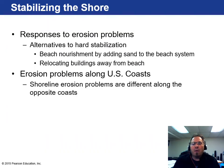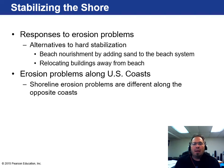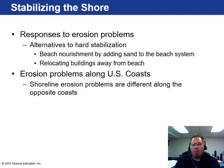The only two truly effective options for responding to erosion problems are beach nourishment — artificially adding sand to maintain beach levels — and relocating buildings away from the beach, since the beach is inherently unstable. These problems differ between coasts based on geology, tectonics, ocean currents, and prevailing winds.